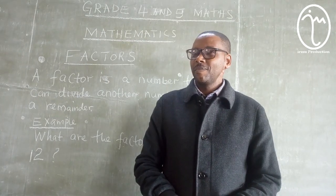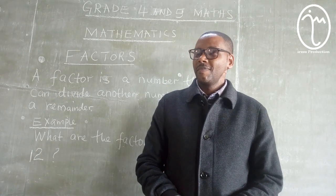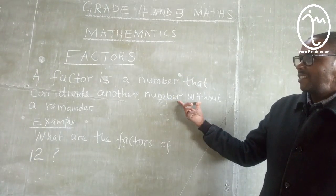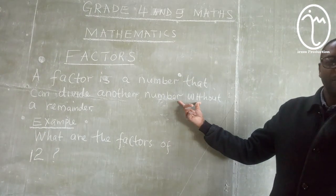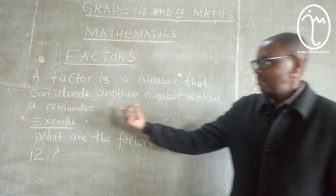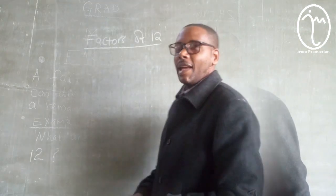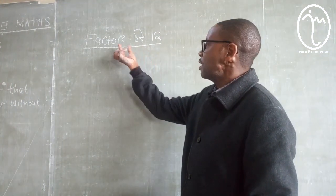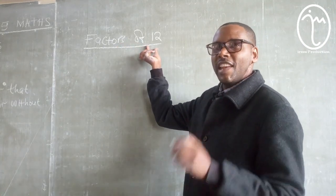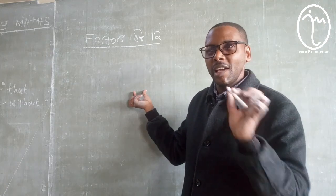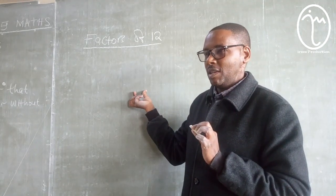A factor is a number that can divide another number. The whole class: a factor is a number that can divide another number without a remainder. Now, I want us to look at the factors of 12 — the numbers that can divide 12 without a remainder.